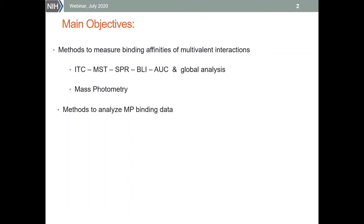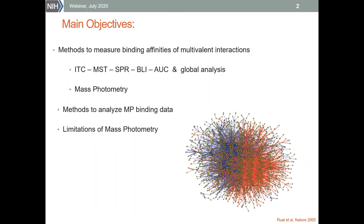I would also like to give you some examples of different ways mass photometry binding data can be analyzed to obtain binding affinity values. And finally, I will touch on the limitations of mass photometry in the context of binding affinity measurements. But first, let's answer two questions: why are we so interested in binding affinities of multivalent protein-protein interactions, and why are those interactions important?